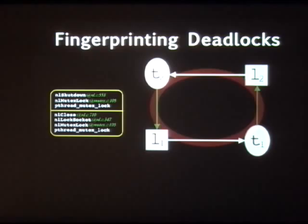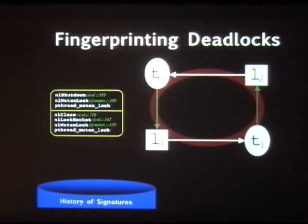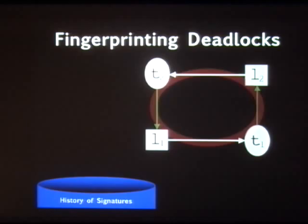In this case you see two call stacks, because there are only two threads involved. If there are multiple threads, these signatures would have multiple call stacks. The signature is then placed in the history for subsequent avoidance. The issue of how the program recovers is completely orthogonal to the discussion — DEMUNIX doesn't change the recovery mechanism.